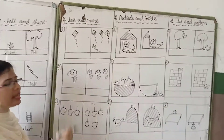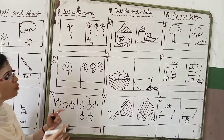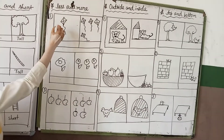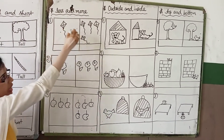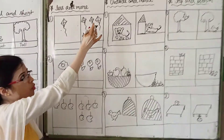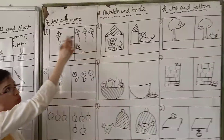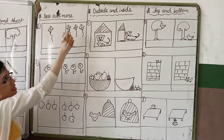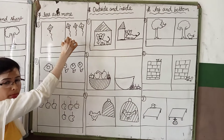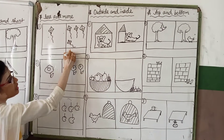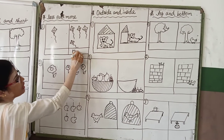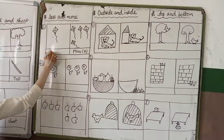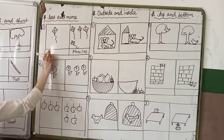Less and more — less and more means more in number and less in number. Just like this: one kite and four kites. One is less than four, that means four is more in number. You can write here more, or M — M means more. And here, less — less or L.